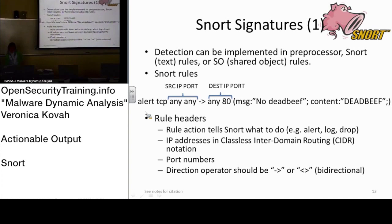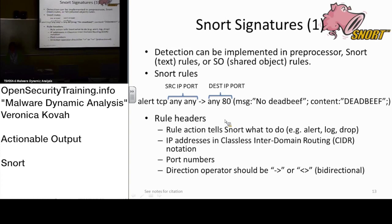The rule header starts with 'alert' or another common keyword, 'drop'. 'Alert' just generates an alert and is done. When you run it in prevention mode, you need to use a drop rule. You can specify either IP or TCP — which layer you want to look at. If it's TCP, then the content match applies to the TCP payload. You also specify source IP, source port, destination IP, and destination port.